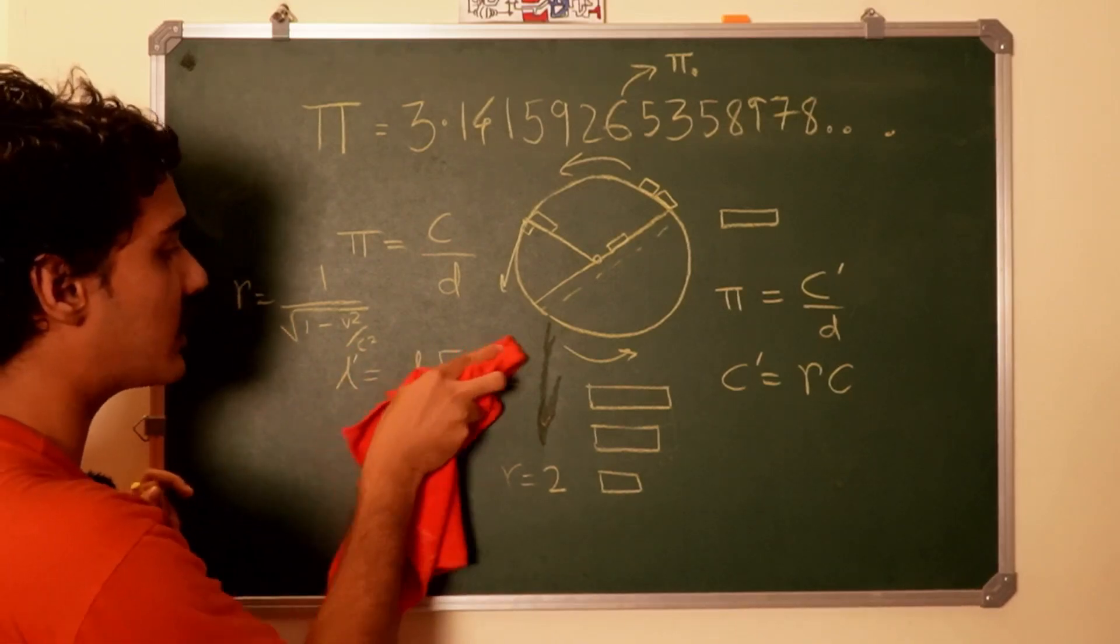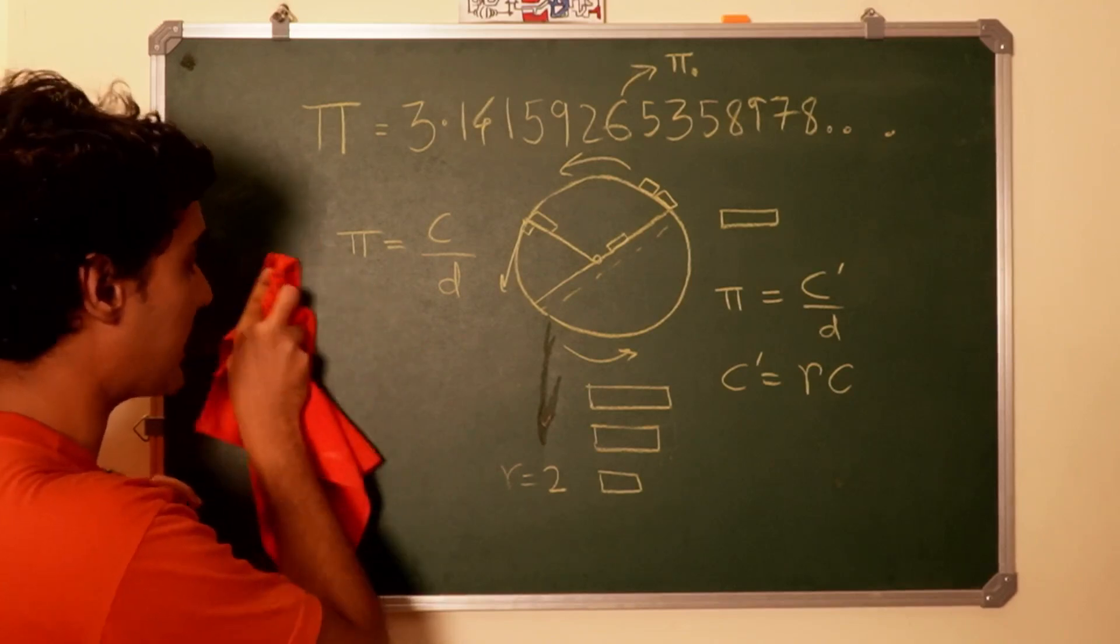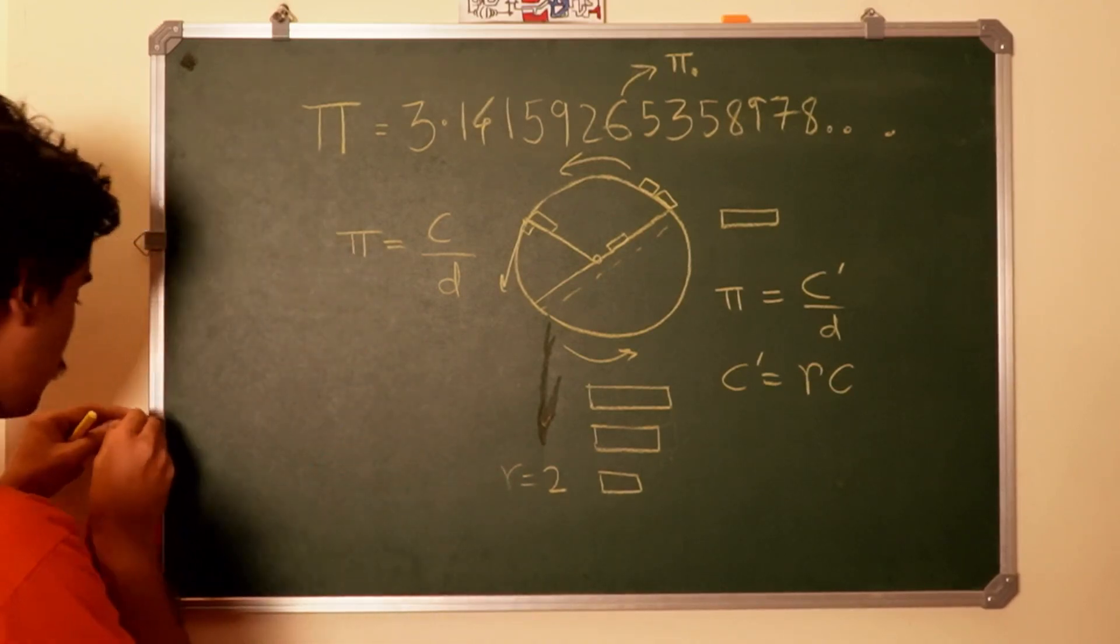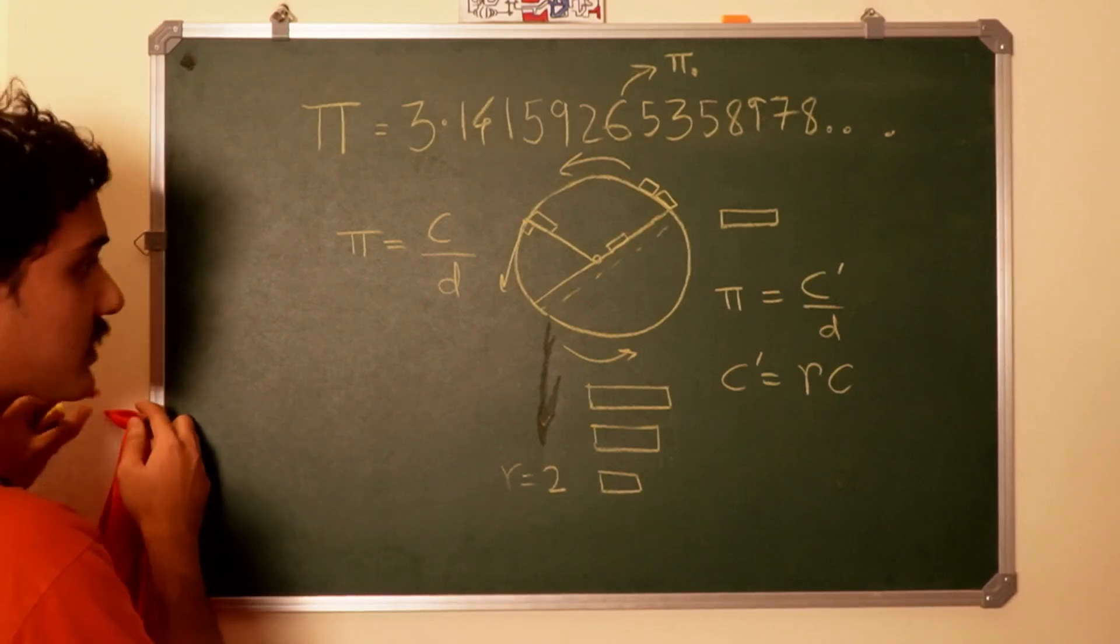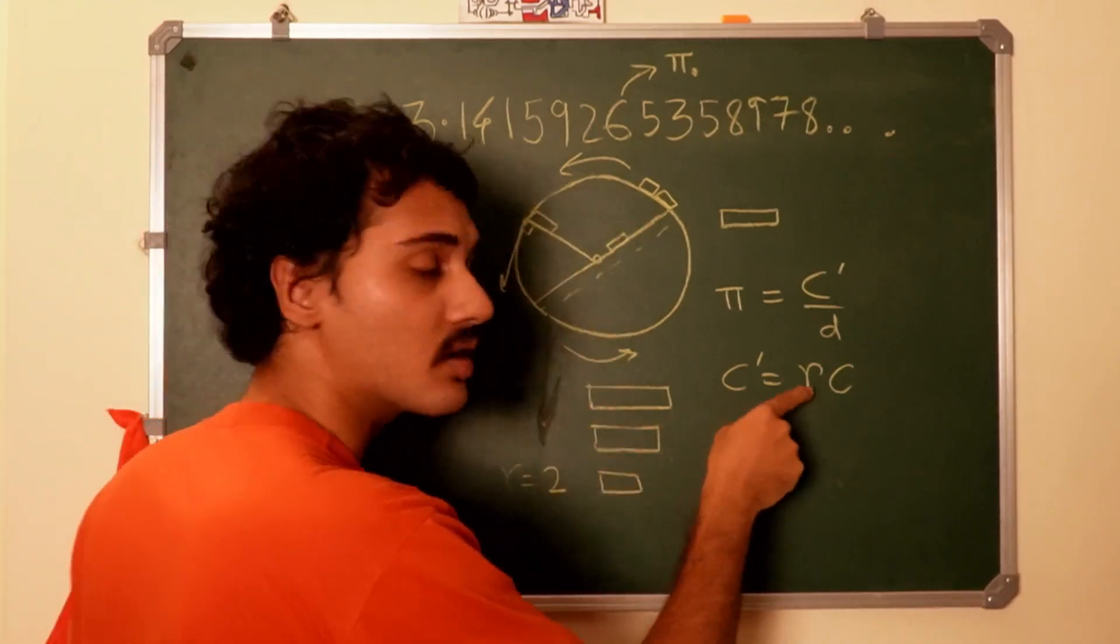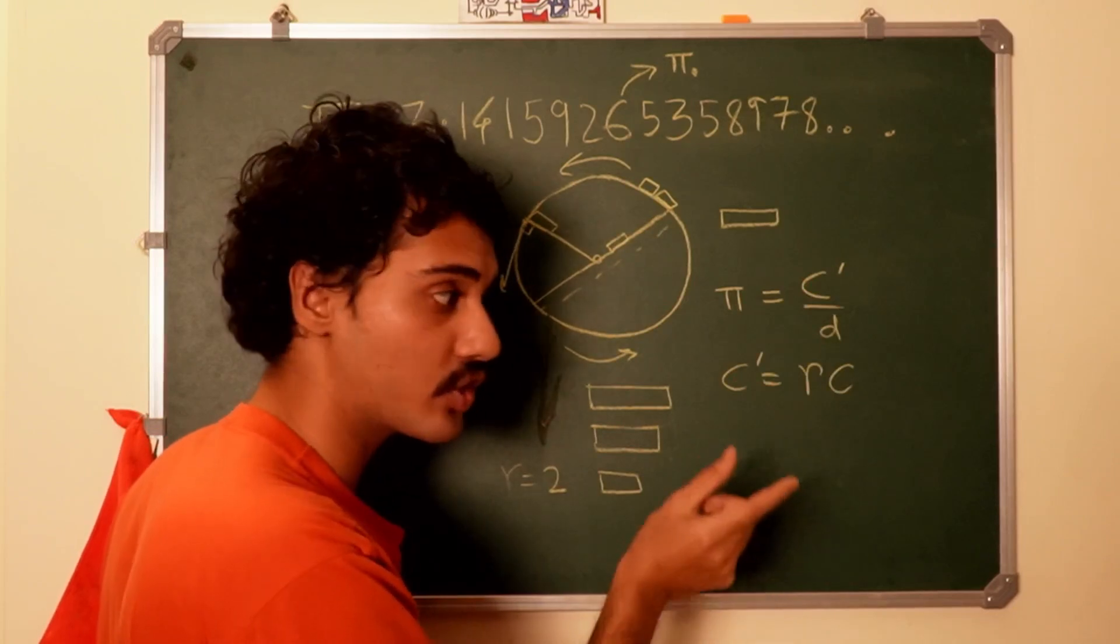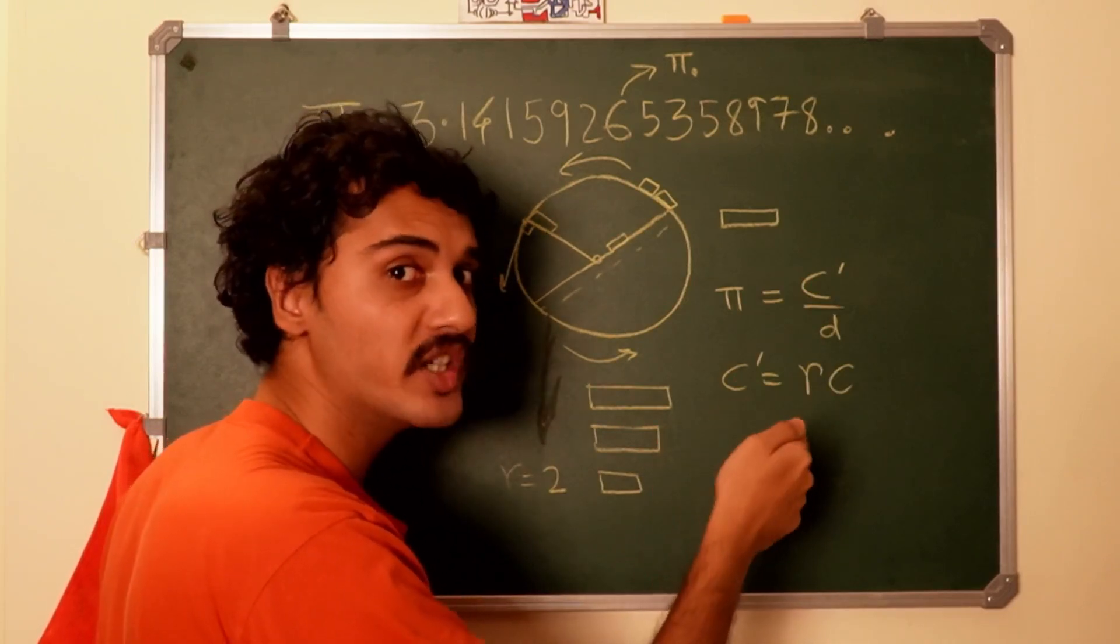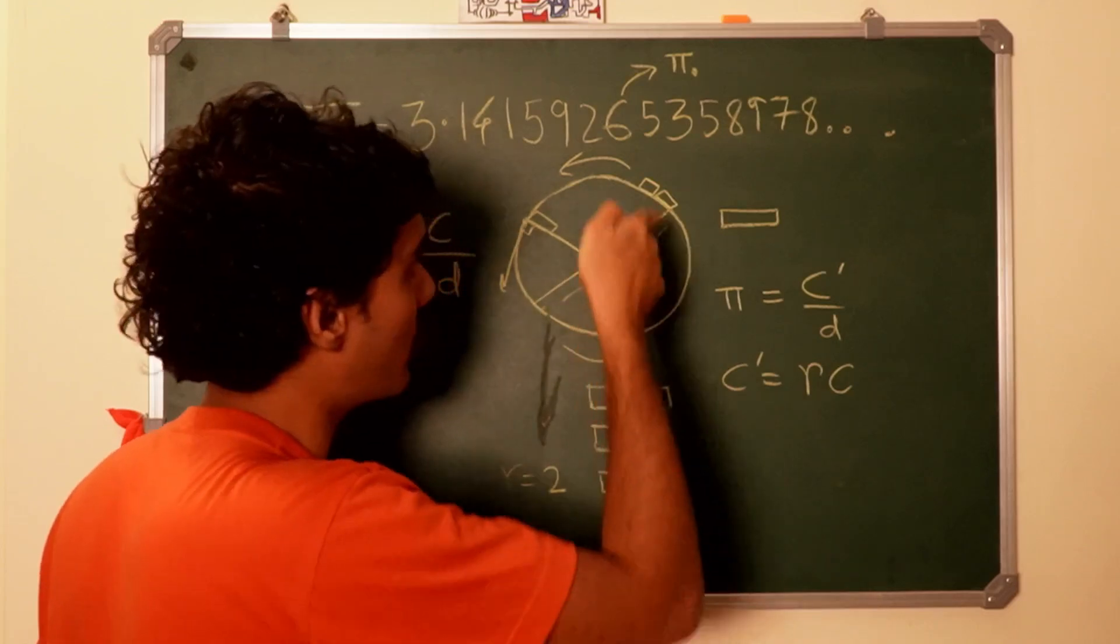And since your meter stick gets shorter when you measure the circumference, you would get a larger circumference because now you need more number of meter sticks to go around that circle, and that's gamma C.